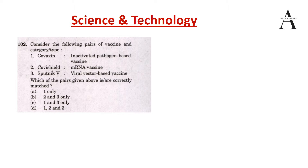The question is asking: consider the following pairs of vaccines and their category or type. They have given Covaxin, Covishield, and Sputnik V, and we have to tell under which category or what science behind it the vaccine has been created - using which technology, or what science makes it work. This question is very important because it comes directly from current affairs and includes important biology concepts from NCERTs.